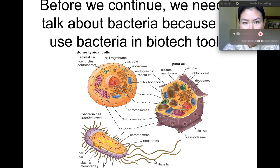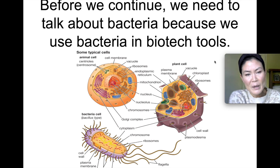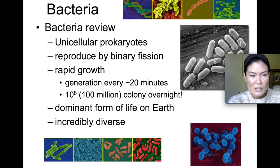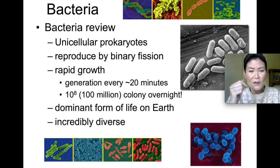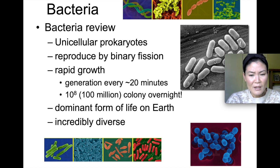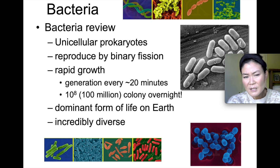Before we continue talking about other biotechnology tools, we need to talk about bacteria, because bacteria are used in a lot of biotechnology tools. As a review: bacteria are unicellular prokaryotes, meaning they're single-celled and don't reproduce by mitosis — they reproduce by binary fission. They can grow very rapidly, doubling their numbers in about 20 minutes, so you can get a hundred million bacteria overnight starting from just one. They're found all over the earth and are the dominant, incredibly diverse form of life. We say strains of bacteria rather than species.